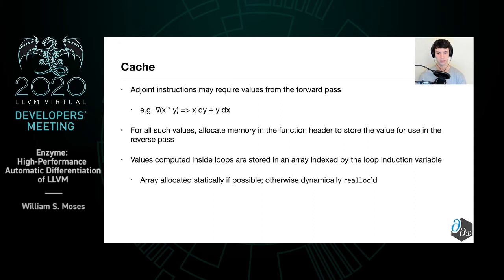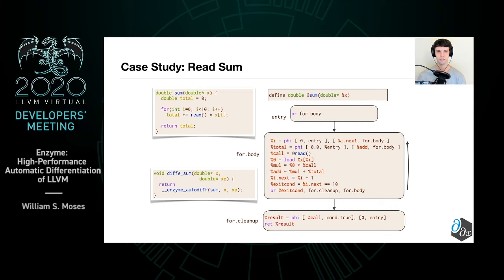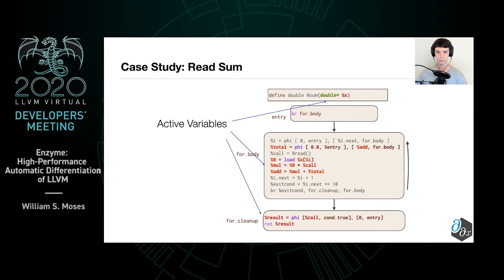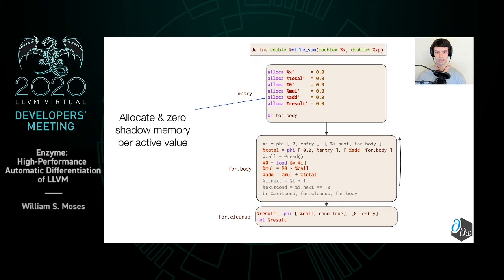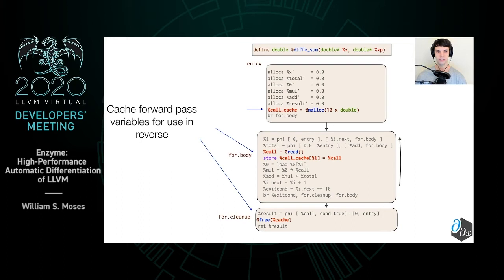Let's see an example. Suppose we have the following code which takes in a vector x and multiplies it by a vector of reads. On the bottom left, we see that we have to pass into the enzyme autodiff function the function being called, the input, as well as a shadow where the result will end up. On the right, we have the corresponding LLVM for the function. We begin by taking the active variables — the argument, the things being summed, and the result. We allocate and zero shadow memory for all these active values. We also make sure to cache any forward pass values needed in the reverse. In this case, we cache the call to read, creating a 10-element array of doubles where we store these.